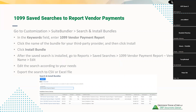Once you have decided on a third-party provider, there are 1099 safe searches to report vendor payments in NetSuite. To get those safe searches, navigate to the Suite Bundler, Search and Install Bundles, and type in the keyword search '1099 vendor payment reports' and click search. It will come up with a list of the third-party vendors and their bundles. SOVOS has two separate bundles for the 1099-MISC and 1099-NEC, while Yearli and Track 1099 also have both report types included.